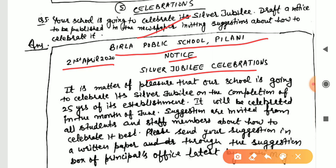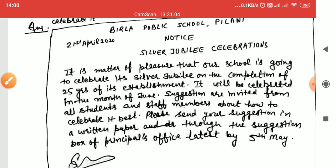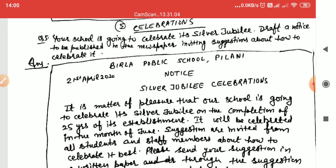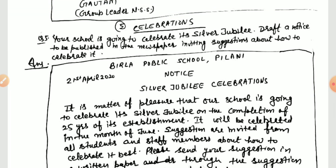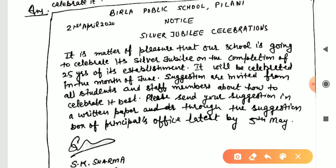Write the school name, then 'Notice,' then the title 'Silver Jubilee Celebrations,' and the date on the left. Start: 'It is a matter of pleasure that our school is going to celebrate its Silver Jubilee on the completion of 25 years of its establishment.' It will be celebrated in the month of June. Since the question asks for suggestions on how to celebrate, you do not need to give a particular date yet.